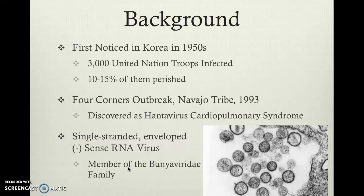So what exactly is Hantavirus? It is a virus with a genome that contains three single strands of negative-sense RNA, of which the largest strand codes for glycoproteins that form an envelope — making them very difficult to destroy. It is a member of the Bunyaviridae family, which are typically arthropod-borne viruses, but Hantavirus is very unique to this family.